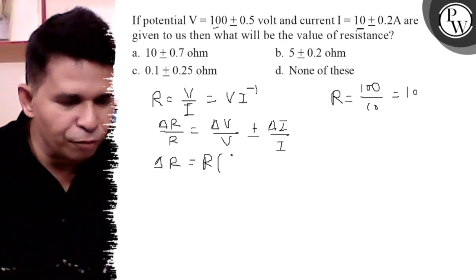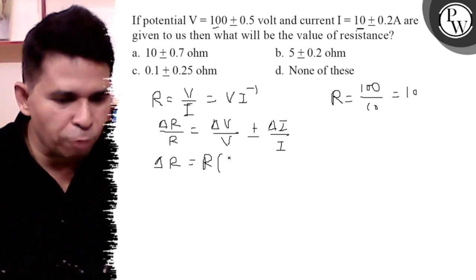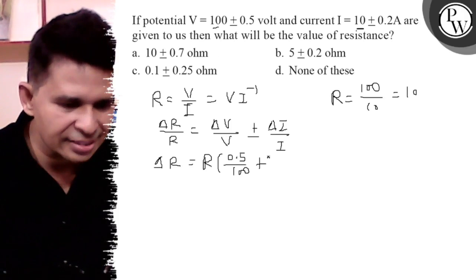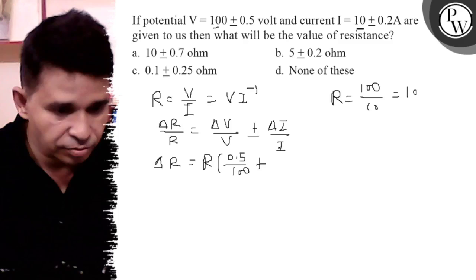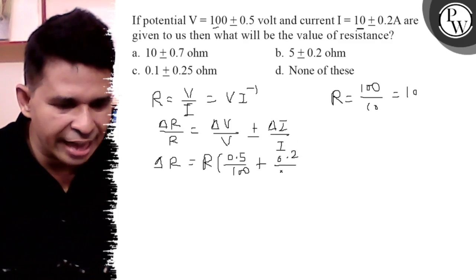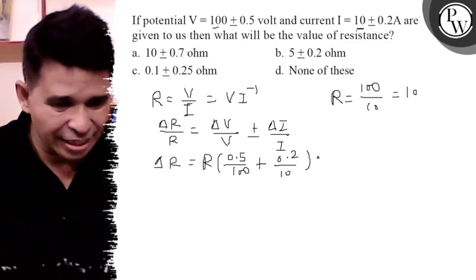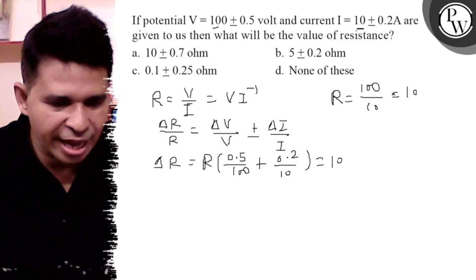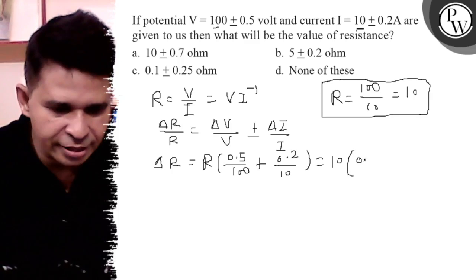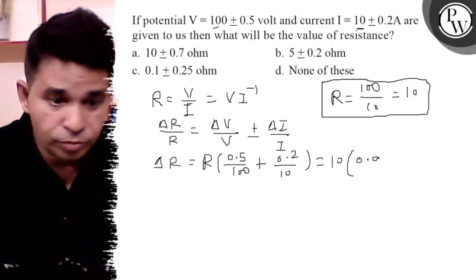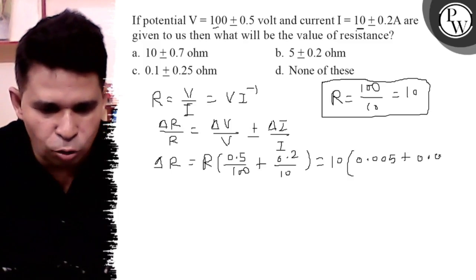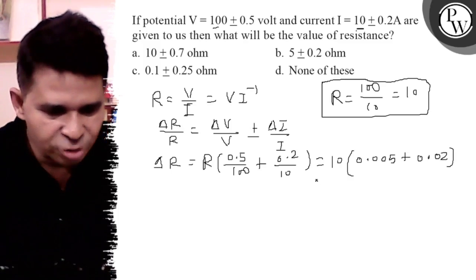It is R times delta V by V, which is 0.5 upon 100, plus delta I, 0.2 upon 10. So what is this? 0.005 plus 0.02. Is that clear? So it is 0.025, and delta R is 0.25.